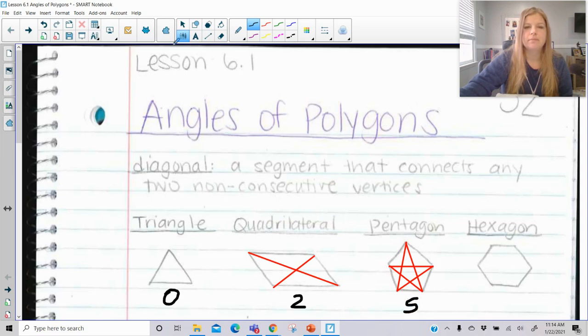It's a star. And a hexagon, if I start from this point here, I can make one, two, three, then four, five, six, seven, eight, nine. So in a hexagon I can make nine diagonals.